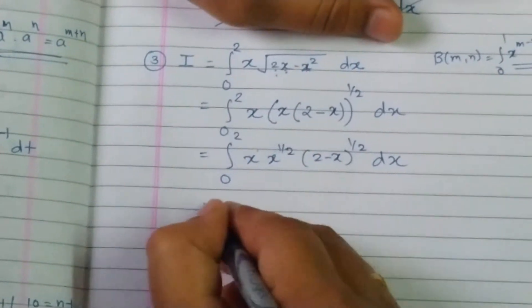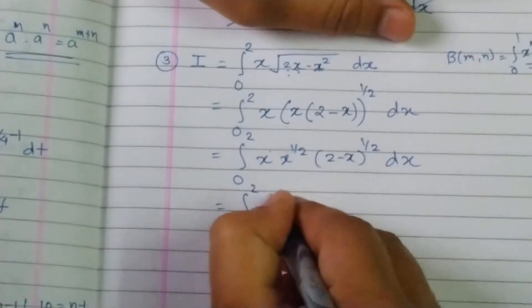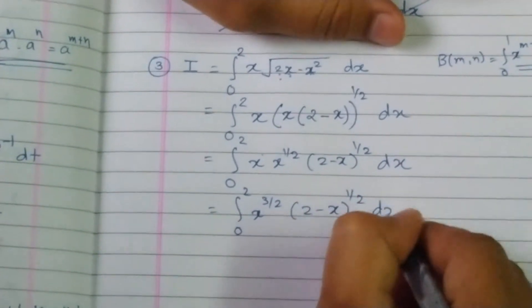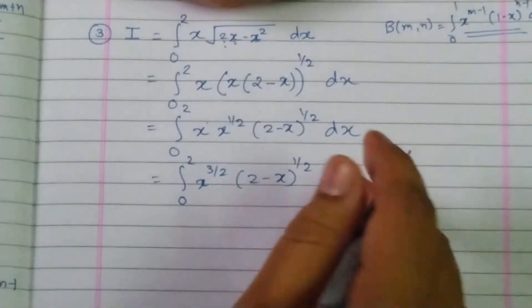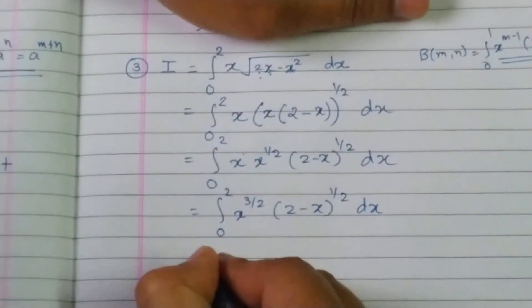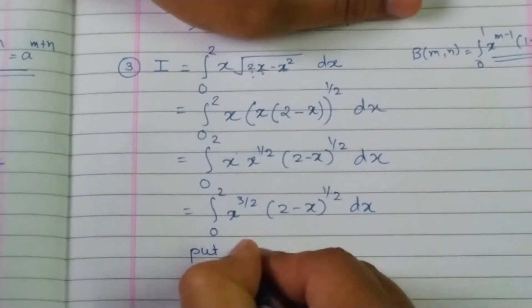1 plus 1 by 2 gives x raise to 3 by 2, into 2 minus x raise to 1 by 2, dx. I hope this problem becomes same as the previous one. So now what can be the substitution? We are going to make a substitution.